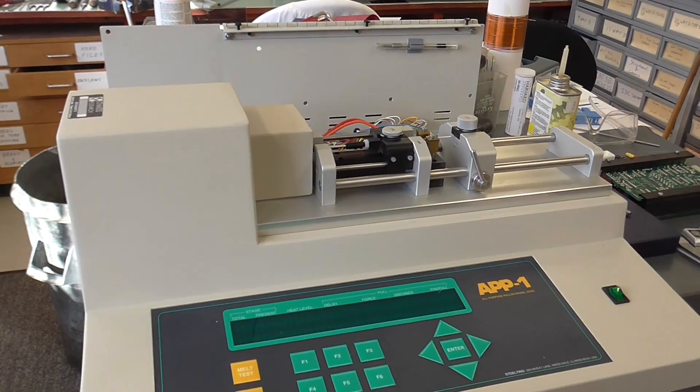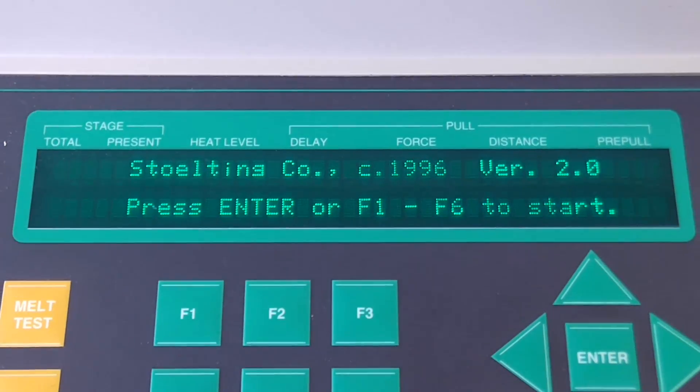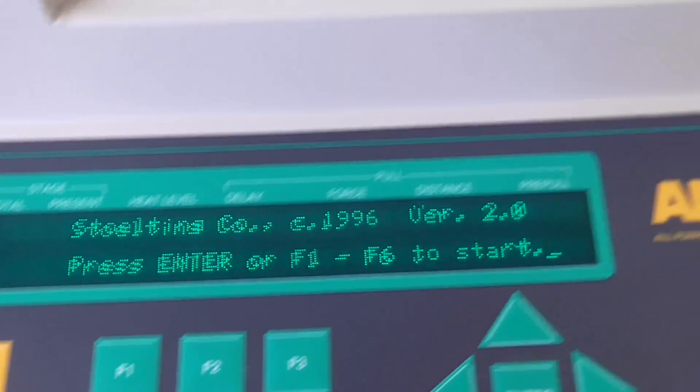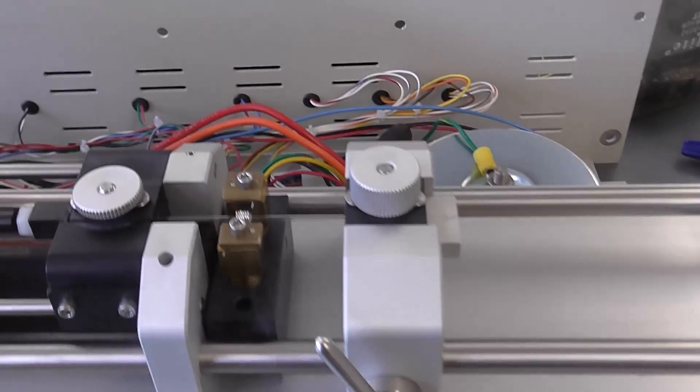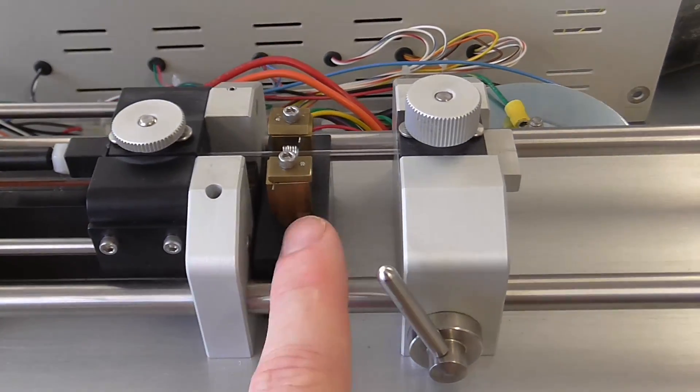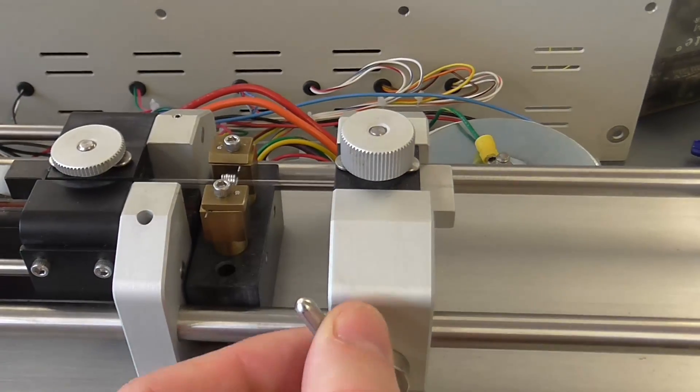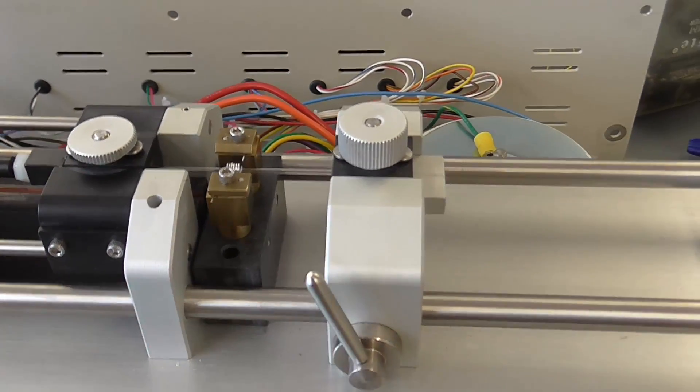So I'll just get it powered up and we'll run a test on it. OK, you can see we've got the start-up message, the carriage is all the way to the right, capillary tube is clamped, the loading block is locked.